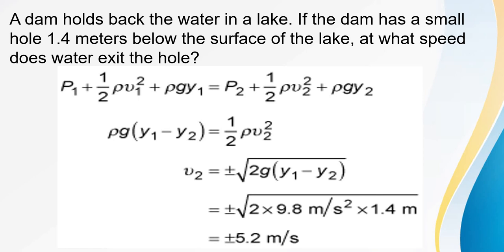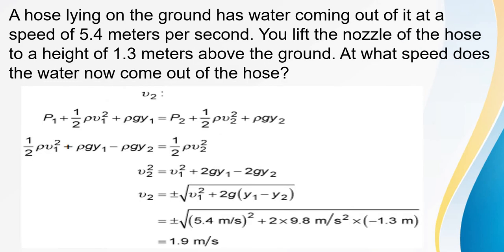Next problem: a hose lying on the ground has water coming out at 5.4 m/s. You lift the nozzle to a height of 1.3 meters above the ground. At what speed does water now come out of the hose? We can apply Bernoulli's principle again.